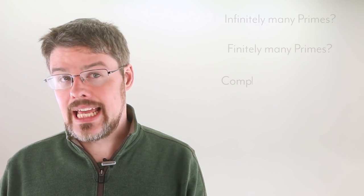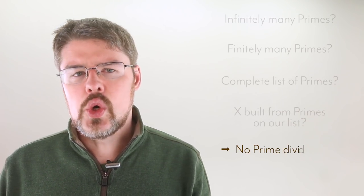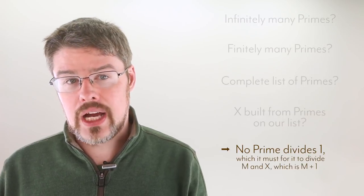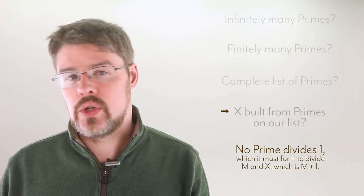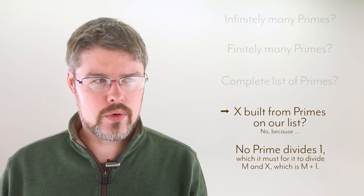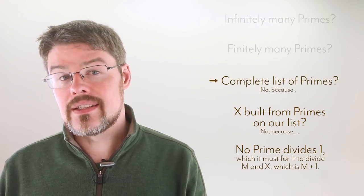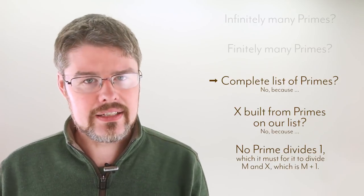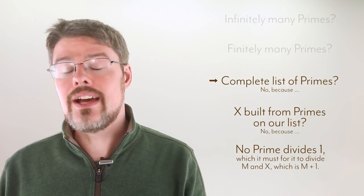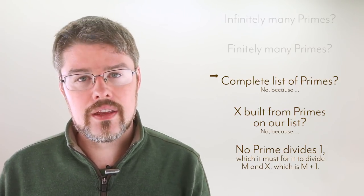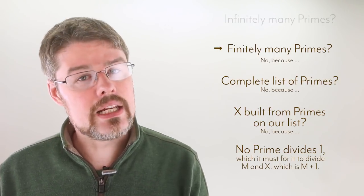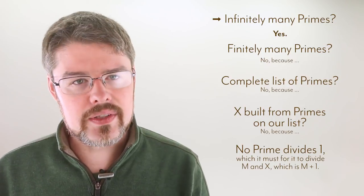And here's the contradiction. This may feel a bit like the ending of Inception. No prime number on our list of all primes divides m plus 1, so m plus 1 is either prime or divisible by primes that aren't on our list. But that means that our list of all primes is incomplete. This means that it was never a list of all primes to begin with. This means that there are not finitely many primes. This means that there are infinitely many primes.